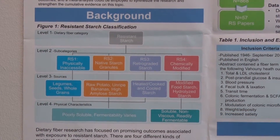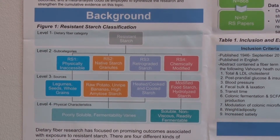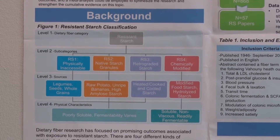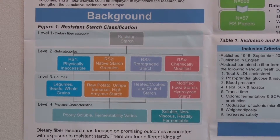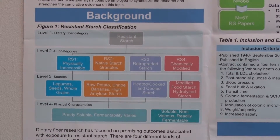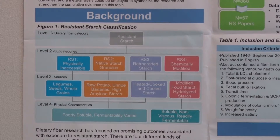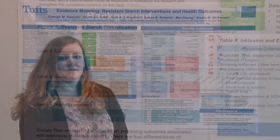There are four types of resistant starch. Type 1 is physically inaccessible, type 2 is native starch granules, type 3 is retrograded starch, and type 4 is chemically modified starch.